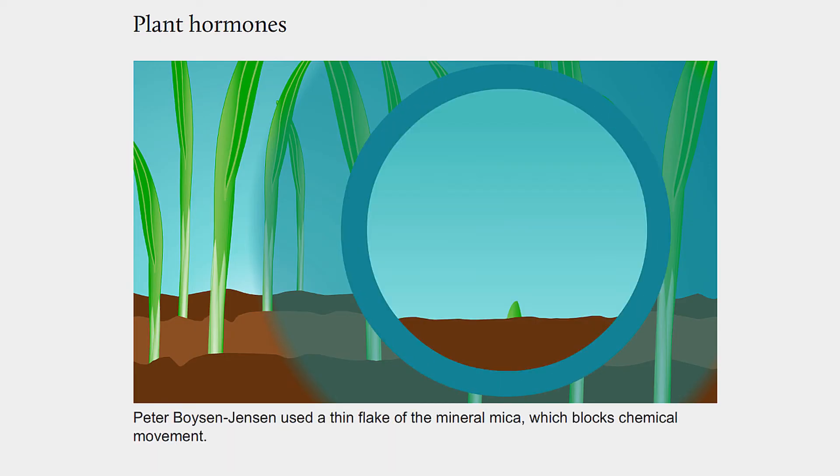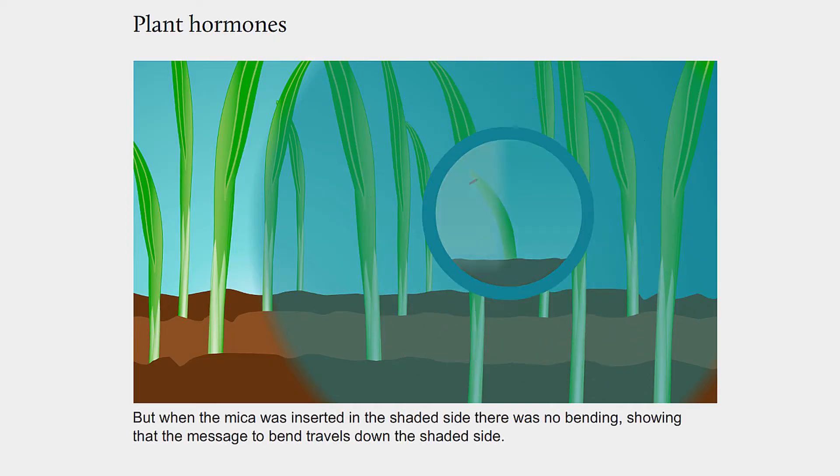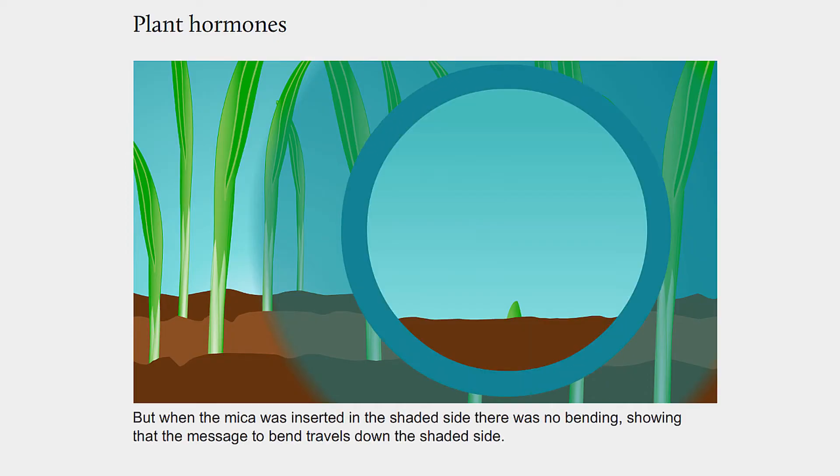Peter Boysen Jensen used a thin flake of the mineral mica, which blocks chemical movement. When it was inserted in the illuminated side, bending occurred normally. But when the mica was inserted in the shaded side, there was no bending, showing that the message to bend travels down the shaded side.